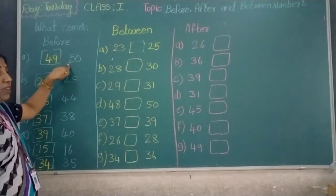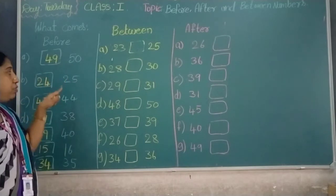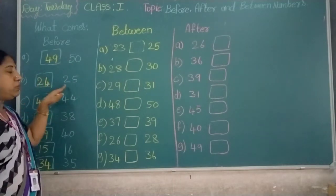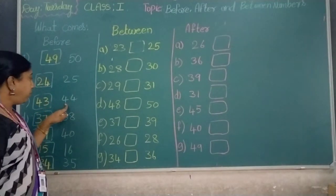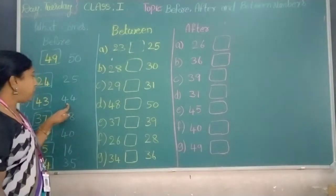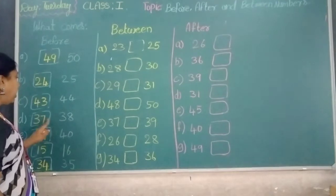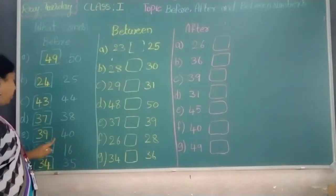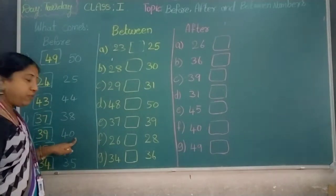What comes before 50? 49 comes before 50. What comes before 25? 24 comes before 25. What comes before 44? 43 comes before 44. What comes before 38? 37 comes before 38. What comes before 40? 39 comes before 40.